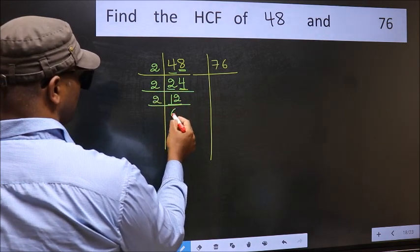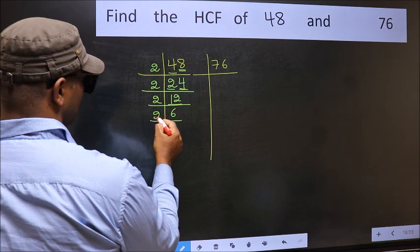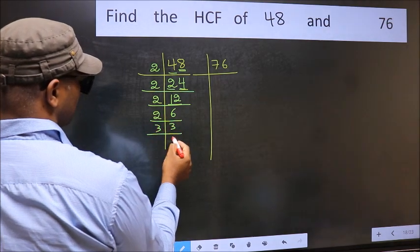Now 12 is 2 times 6, 12. 6 is 2 times 3, 6. 3 is a prime number, so 3 times 1 is 3.